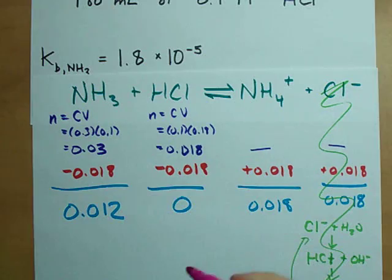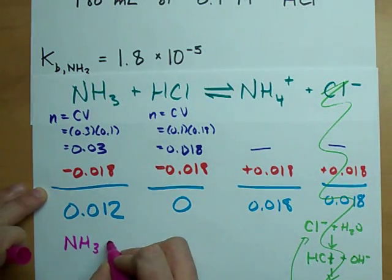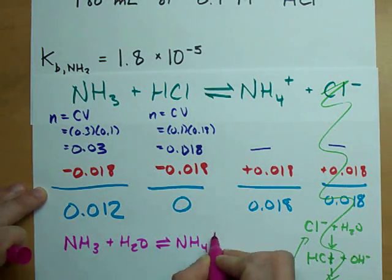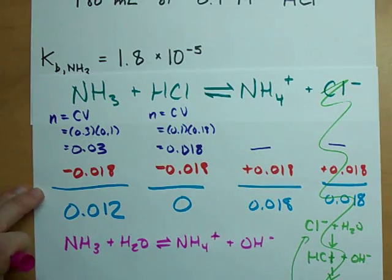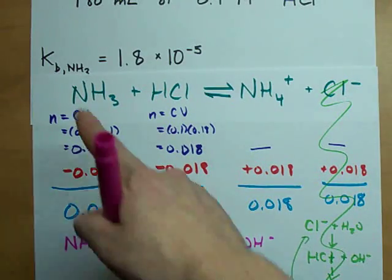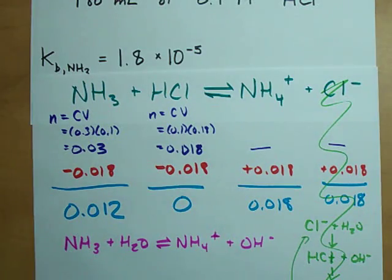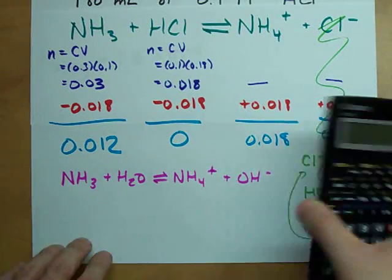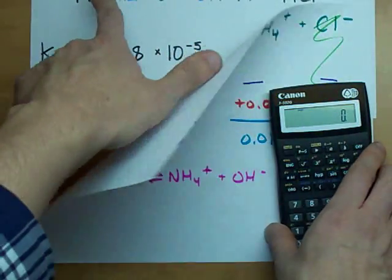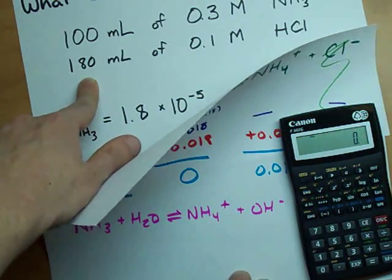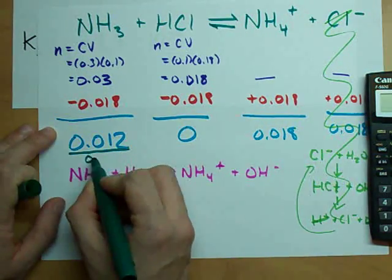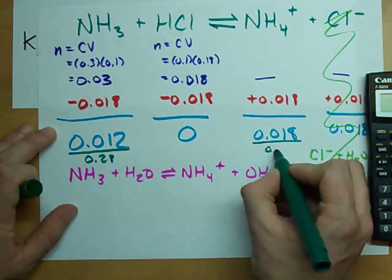So we got the numbers of moles that we need. All we need to do is use the KB to solve for something that can help us find pH. Check it out: NH3 will react with water to make NH4+ and OH-. This is where you use an ICE table, now that we're using K to figure out what the new concentrations of each will be. Now watch out, these are in moles. In order to get concentration in moles per liter, you need to divide by the total volume, 280 milliliters. To get the concentration, I have to divide by 0.28 liters.